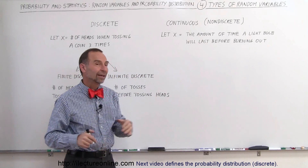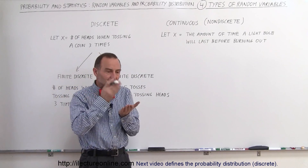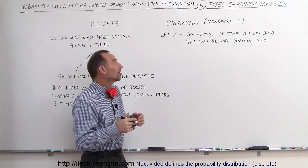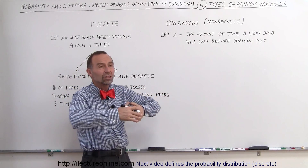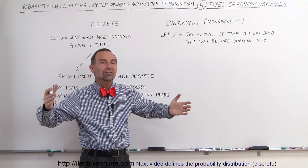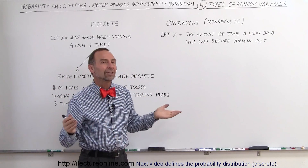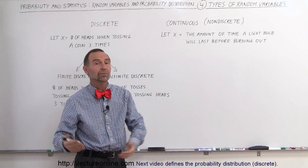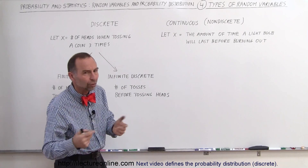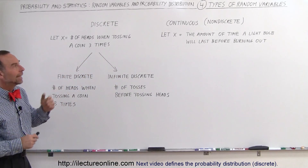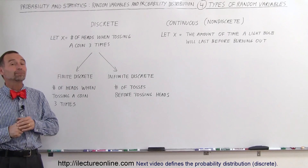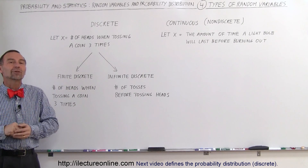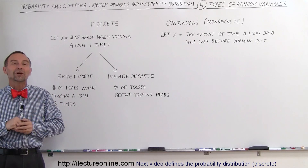And when we come to the continuous type, in a way it's infinite because there are so many subdivisions you can have, but it's better to simply say it's continuous — there's a continuous number of possibilities with no hard divisions between them. So we call it continuous or nondiscrete, like the amount of time a battery or a light bulb will last. Those are good examples of a continuous or nondiscrete random variable. So these are the types, and now we'll go forward using the various types of random variables.